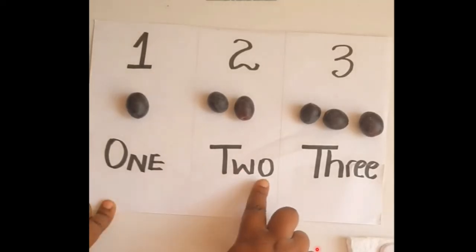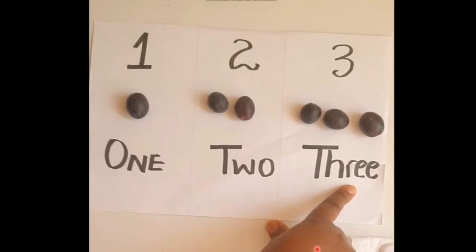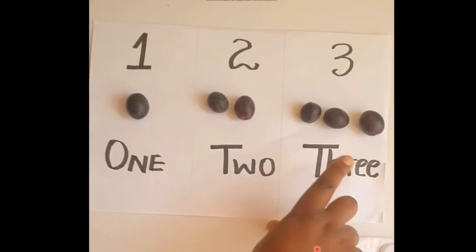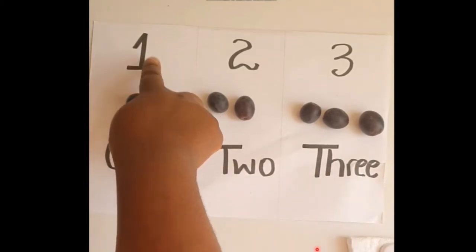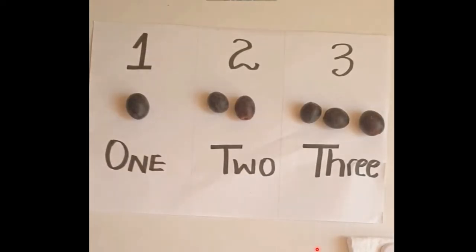You can add the numbers, the word for the numbers at the bottom. But you don't need to. Because the emphasis is really on them identifying the quantity that represents 1, the quantity that represents 2, the quantity that represents 3.